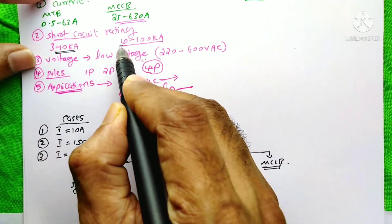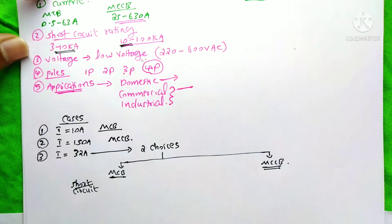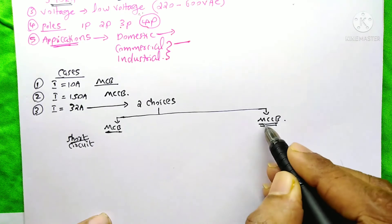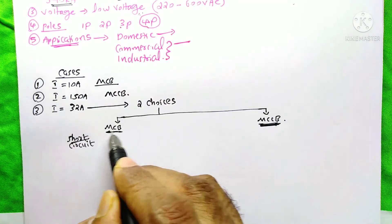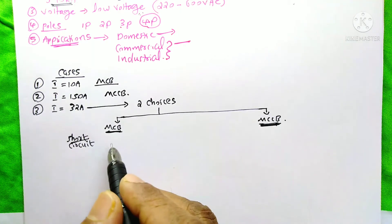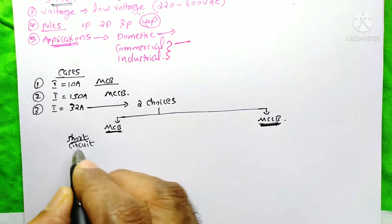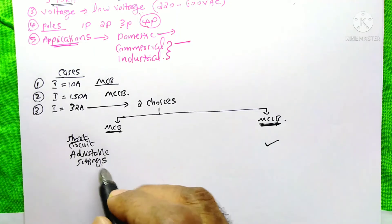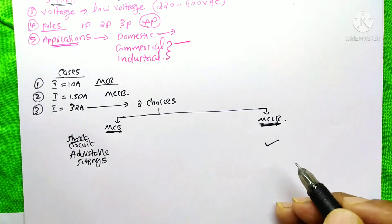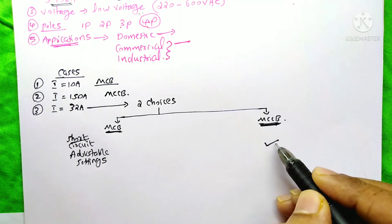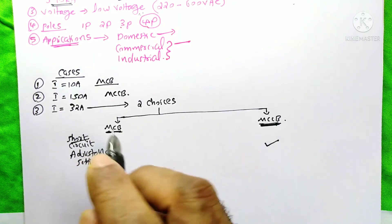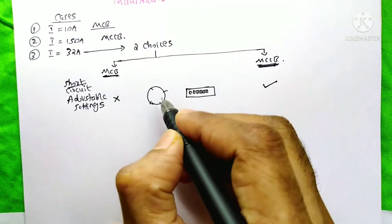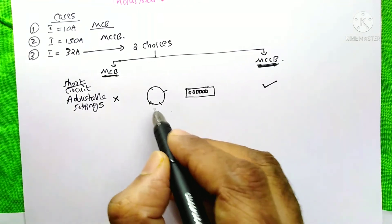If the short circuit current is exactly 10 kilo-amperes, you have two choices, since both the MCB and MCCB offer 10 kilo-ampere ratings. The selection then depends on your budget — if you have enough budget, select the MCCB; otherwise, select the MCB. If your application requires adjustable settings, you must select an MCCB. Adjustable settings allow you to adjust the current settings and the short time current settings on the device, which is not available on the MCB — the MCB is completely automatic.